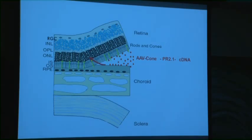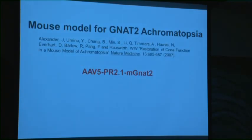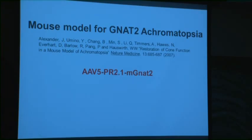2.1 refers to the size — it's 2.1 kilobases in length. The first model we studied was the GNAT2 model, a relatively rare form of achromatopsia. The vector is serotype 5 PR2.1 using the mouse GNAT2 cDNA, and that was published in 2007.